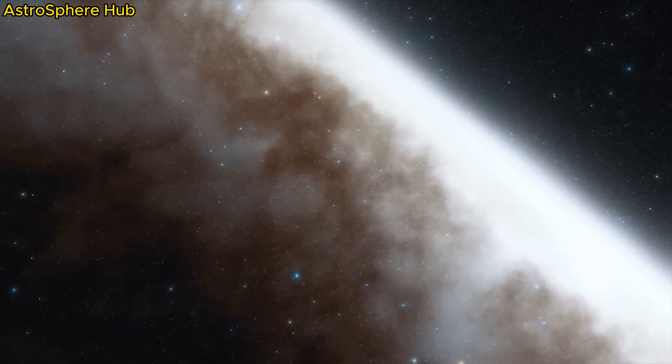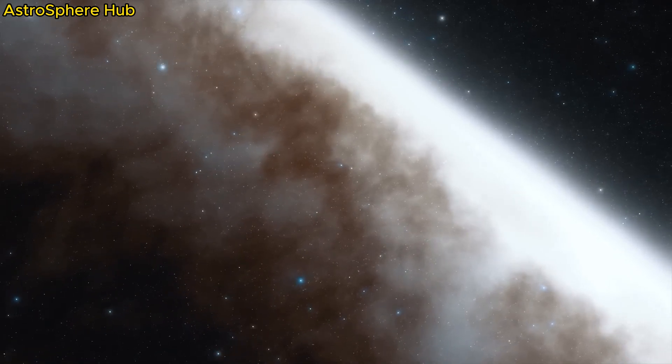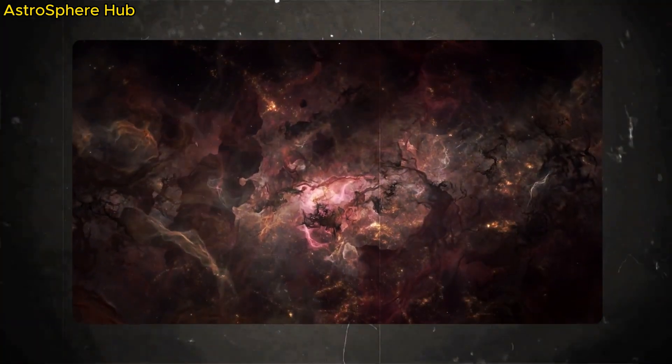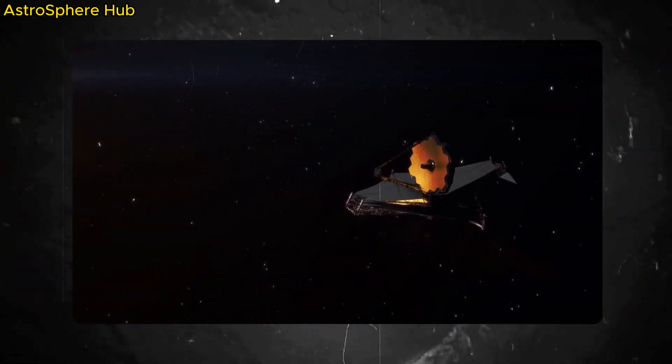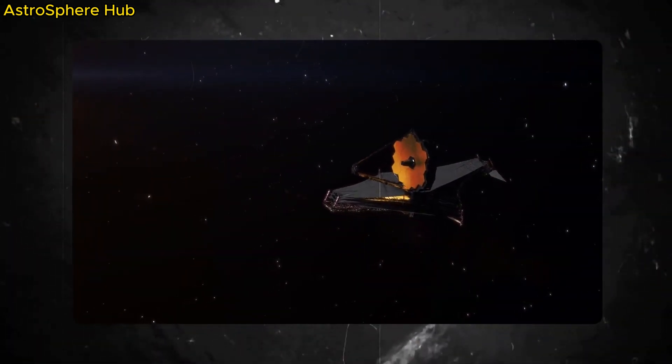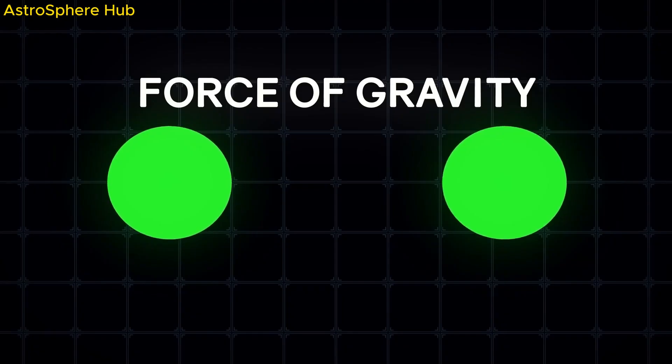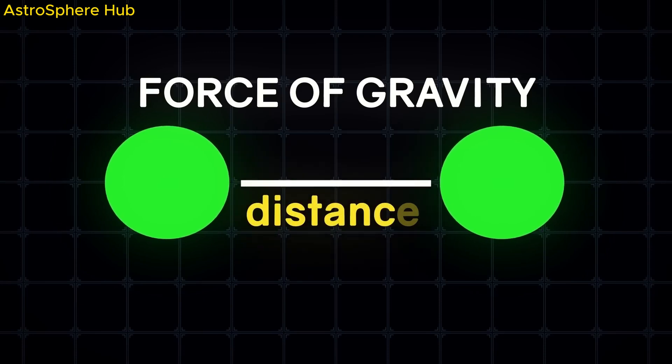This means that many approaches to our astrophysics have been based on false assumptions for more than 100 years, and these assumptions include dark matter. How did scientists actually come up with it?